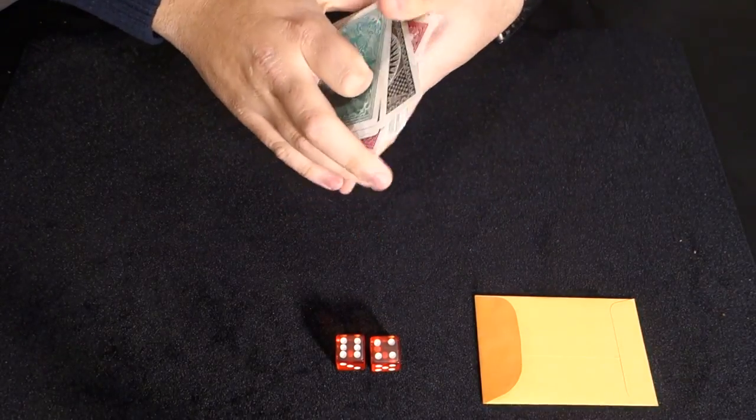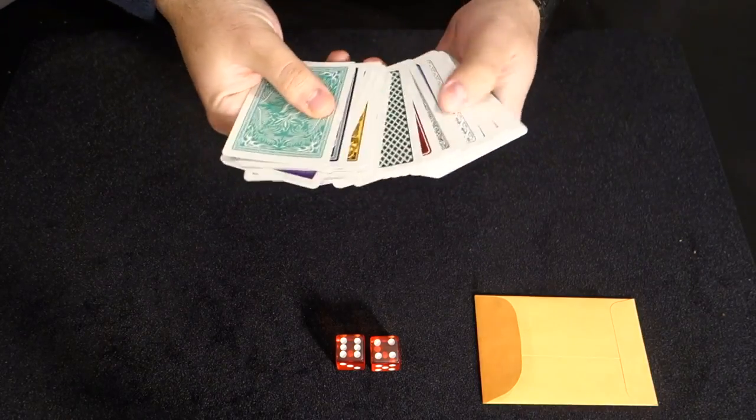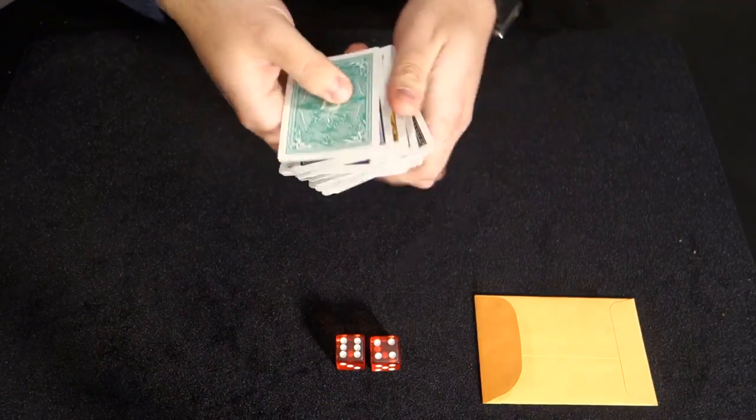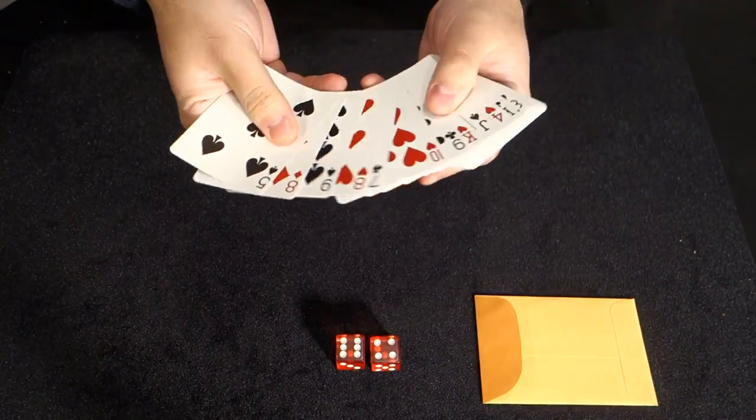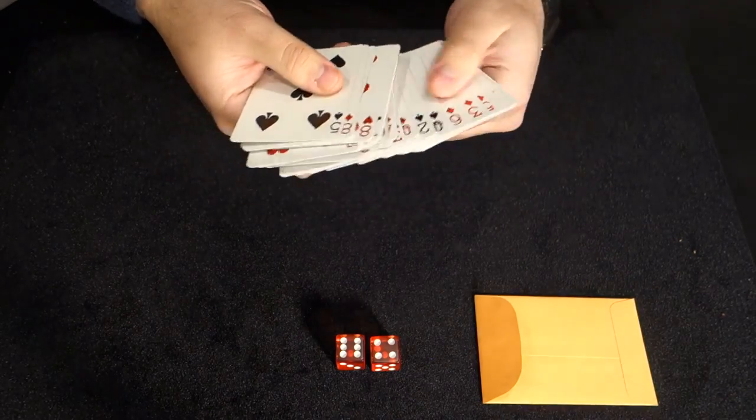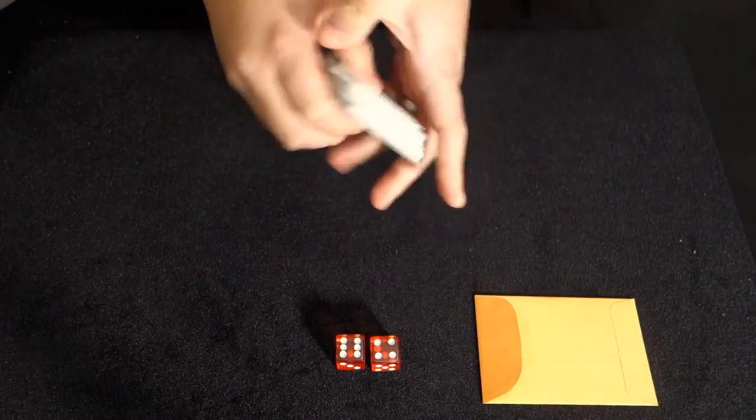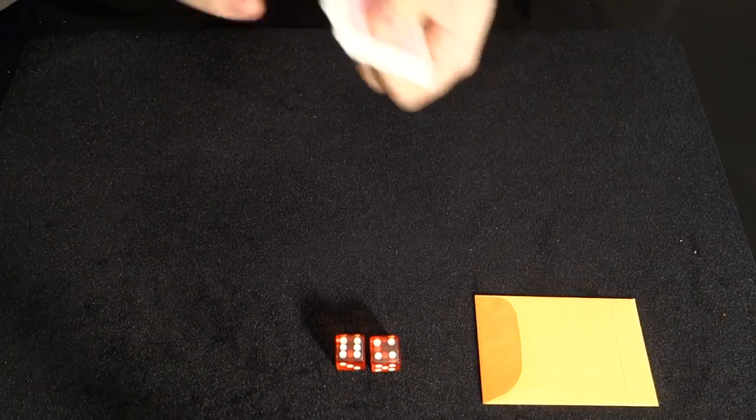So we have a wide variety of selections on the backs. And of course, we have all the values in a deck of cards that you'd expect on the fronts. Right? So what can we do with a unique deck of cards like this?